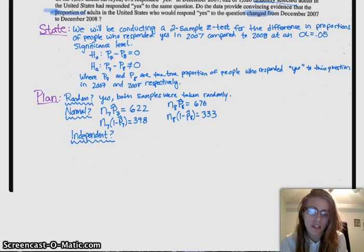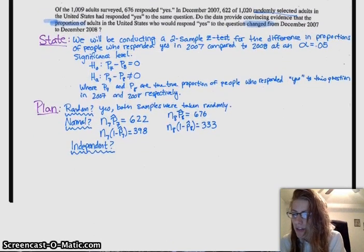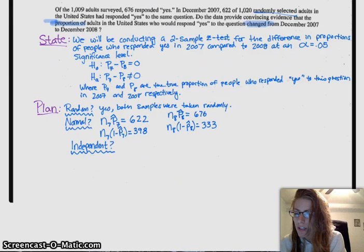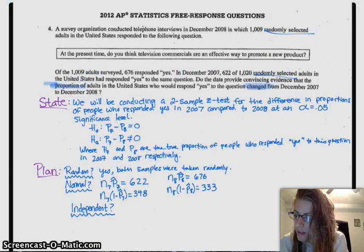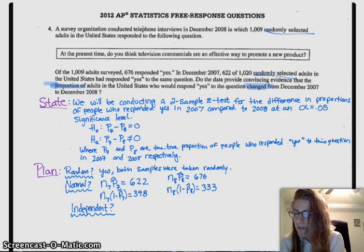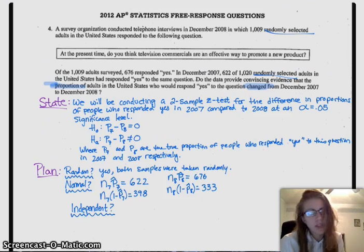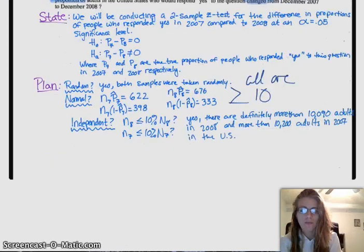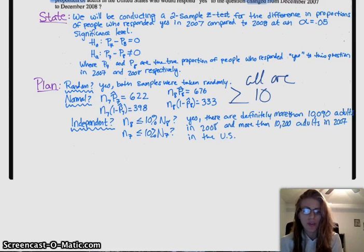10% rule for independence, or independence of trials. In this case, in 2008, there are definitely more than 10,090 adults, and for the other one, there's definitely more than 10,200 adults in the U.S. So we have successfully checked all of our conditions. We're ready to go.